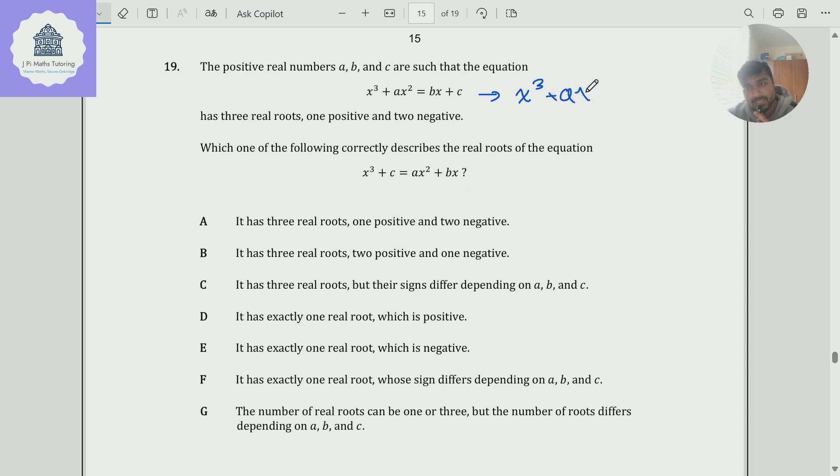So I've got x cubed plus ax squared minus bx minus c equals zero. And with this equation, x cubed minus ax squared minus bx plus c equals zero. And these equations look awfully similar.